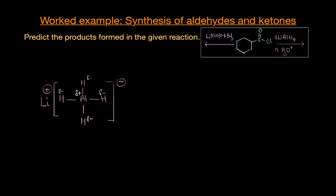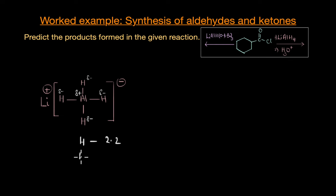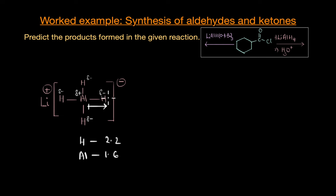Lithium aluminium hydride, as we already know, is a very strong reducing agent. It provides the hydride ion required to carry out a reduction reaction. If you look at the structure of lithium aluminium hydride, aluminium is bonded to four hydrogen atoms. The electronegativity of hydrogen is 2.2, while that of aluminium is 1.6, and as a result, the hydrogens have more electron density around them, giving them a partial negative charge, whereas the metal aluminium gets a partial positive charge.